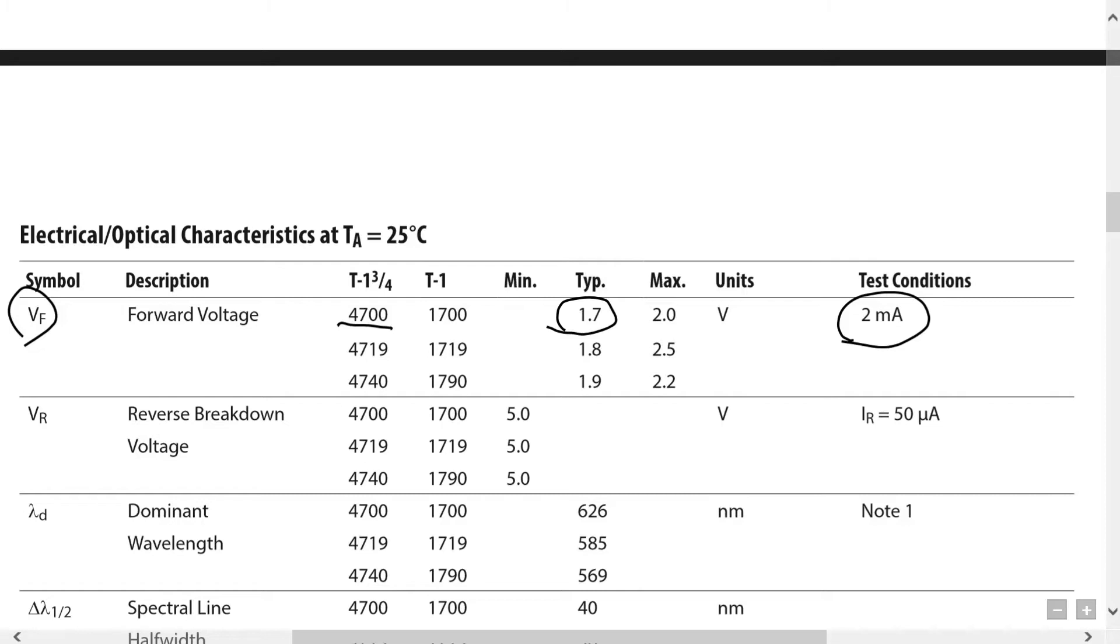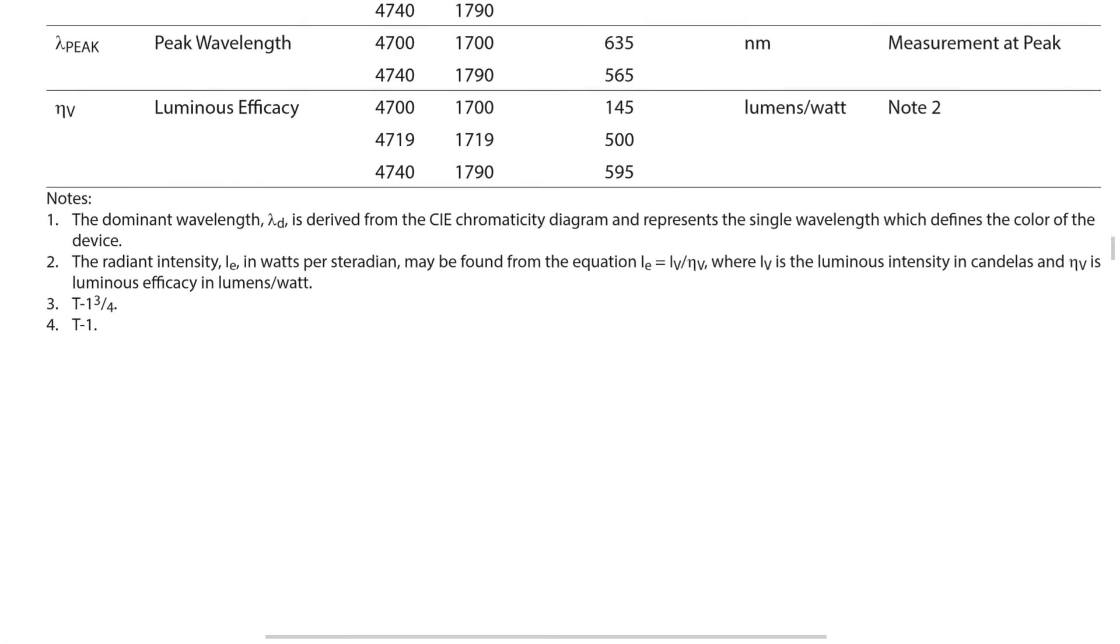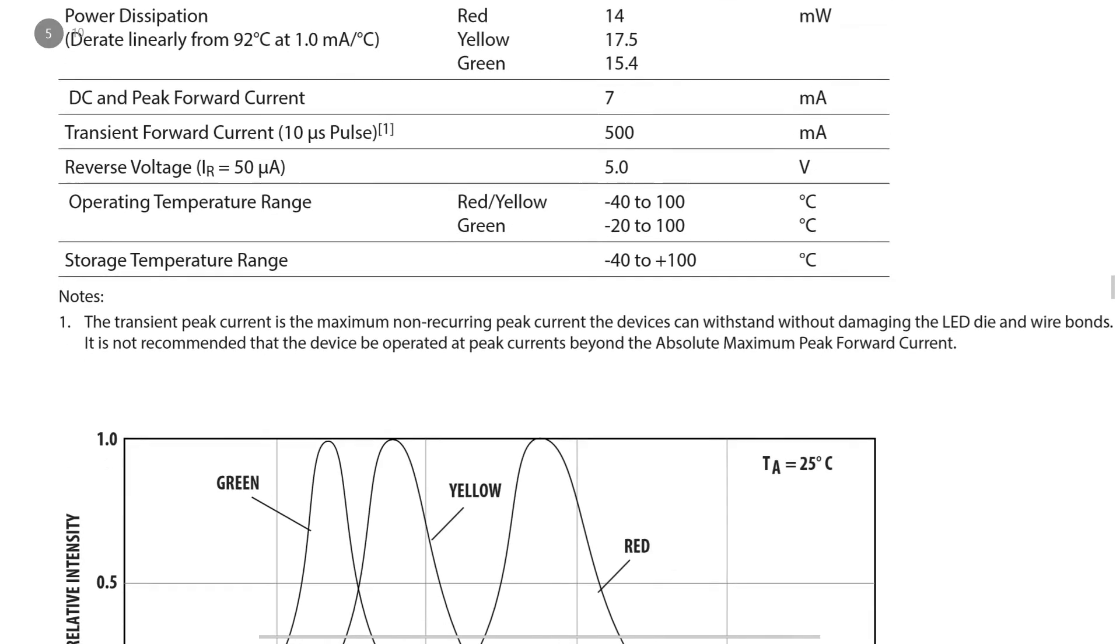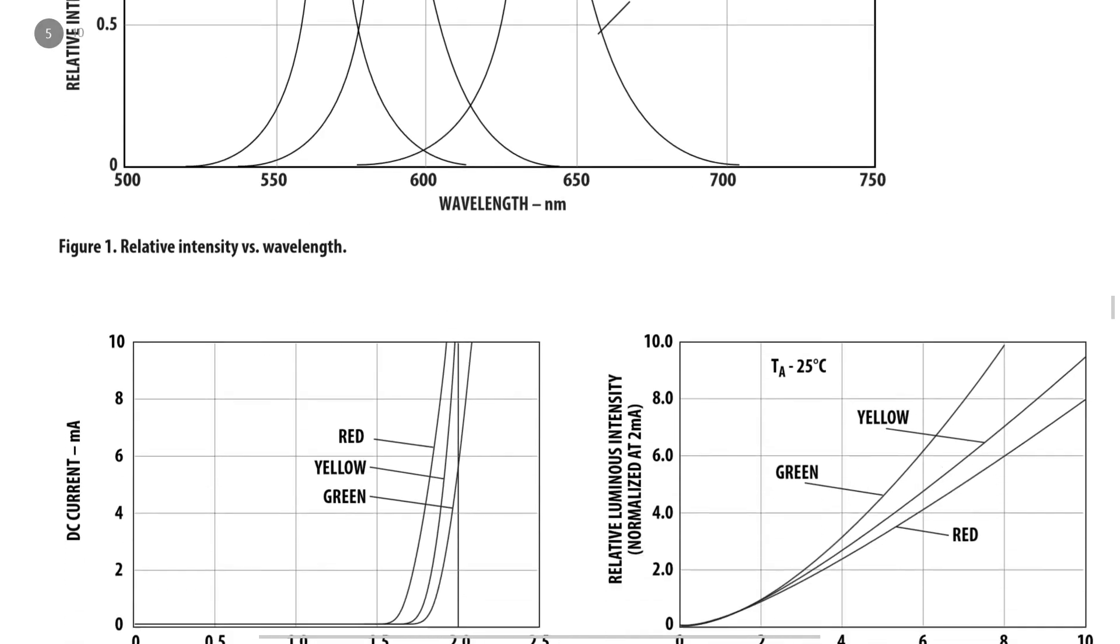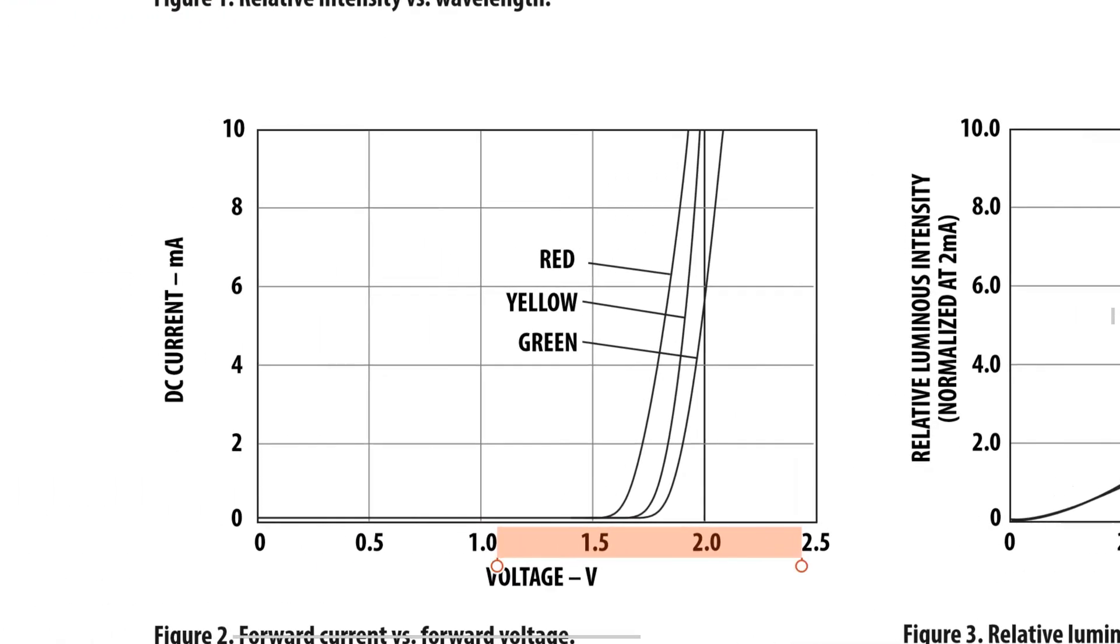Let's scroll and see if we can see some more information. Scrolling. All right, there's the color red. Here we are. This is the one I'm looking for. This is a plot of the voltage on the LED versus the current, the forward current. And here's our red LED right here.